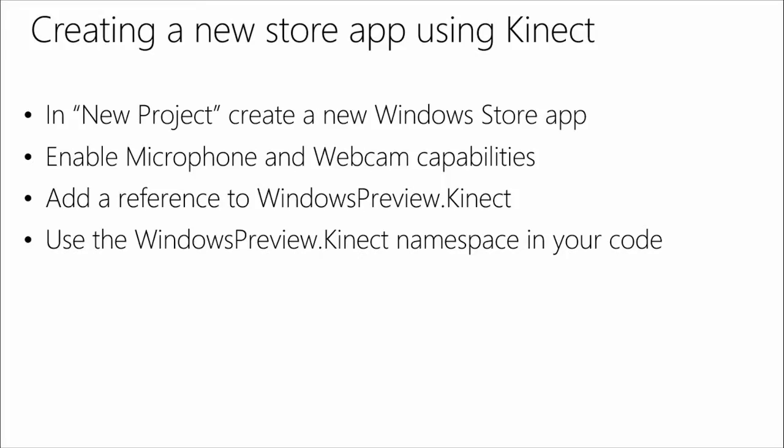Creating a new Store app using Kinect is very simple. Go to New Project, create a Windows Store app, enable microphone and webcam capabilities — you don't want any app able to access your Kinect without permission. Add a reference to Windows.Preview.Kinect in the Windows Extensions category of your reference dialog, then use the namespace and you're ready to go.